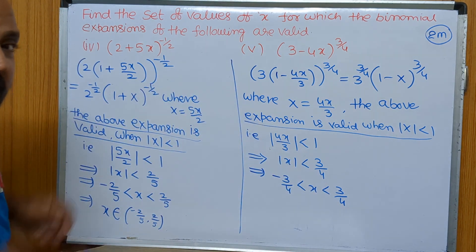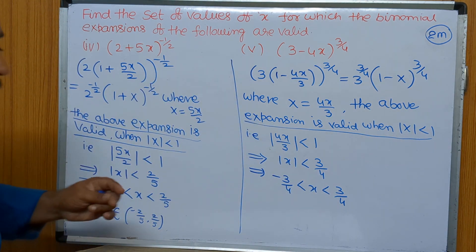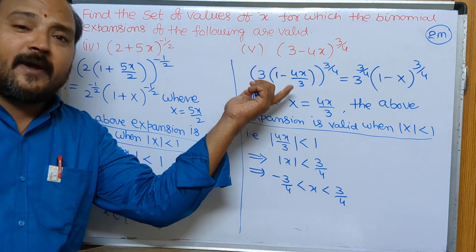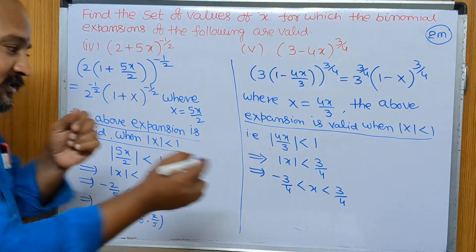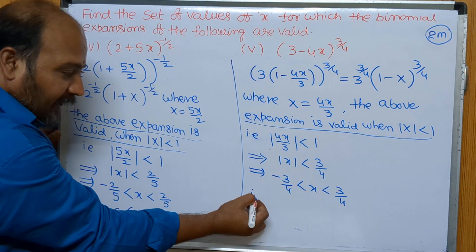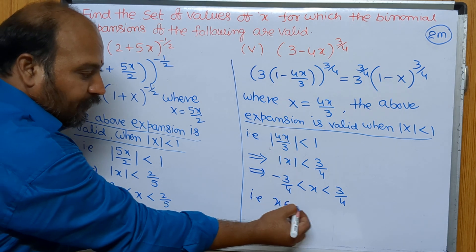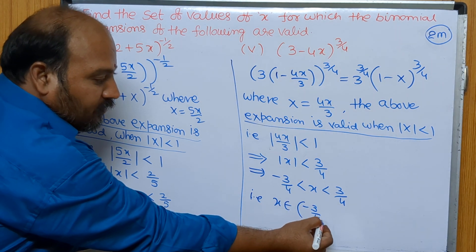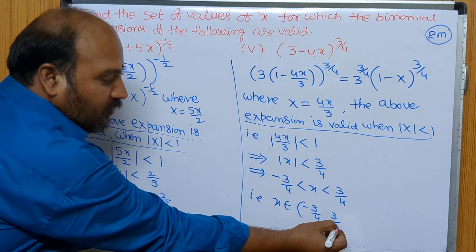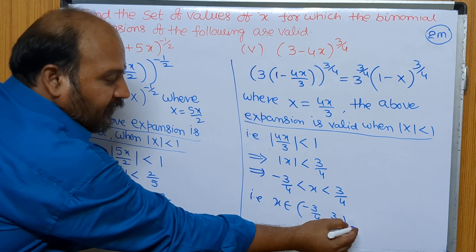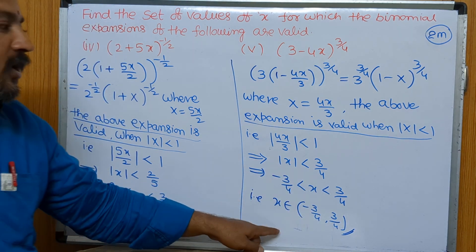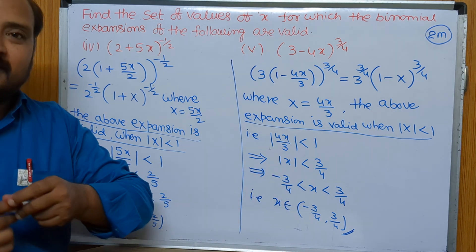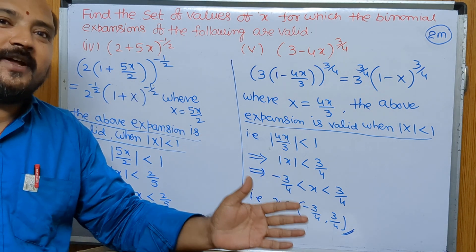So minus 3/4 is less than x is less than plus 3/4. The set of all values of x lies between these two — only then the given expansion is valid. So x belongs to the open interval (−3/4, 3/4). In this interval the given expansion is valid. I hope you understand better.